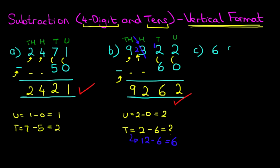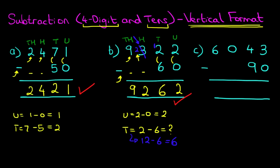We're going to look at one more example. This time, we've got 6,043 minus 90. The first step: I'm going to label the columns. We've got units, tens, hundreds, and thousands. We are now ready to do the subtraction — always check the sign. And as always, we start on the right-hand side first. The units: we have 3 minus 0 — 3 minus 0 is 3.